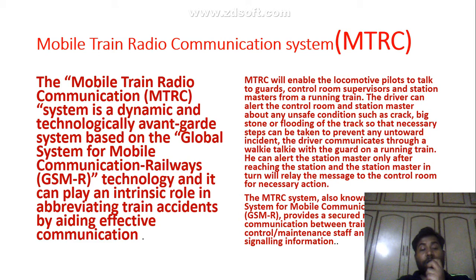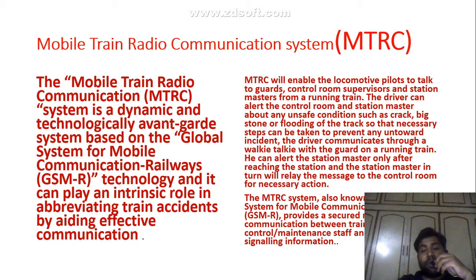MTRC is based on the Global System for Mobile Communications in Railway. MTRC will enable the locomotive pilot to talk to the guard, control room supervisor, and station master from a running train. The driver can alert the control room and station master about any unsafe conditions, such as a crack or any damage to the track, so that necessary steps can be taken.